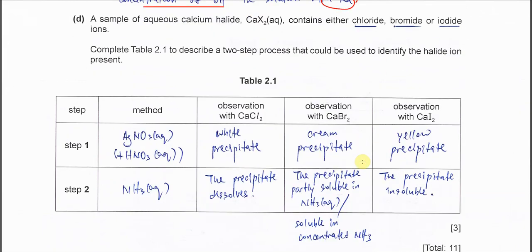Part D. A sample of aqueous calcium halide, CaX(aq), contains either chloride, bromide, or iodide ions. Describe a two-step process you could use to identify the halide ion present. Very easy. The standard method is always silver nitrate. After that, add ammonia solution to test the halides.